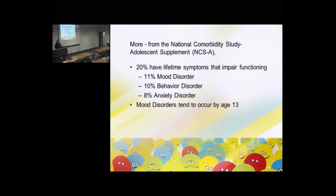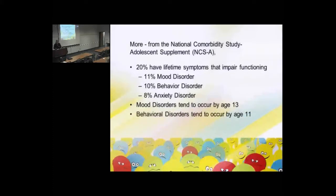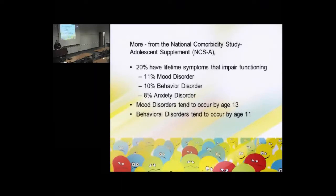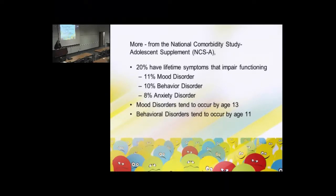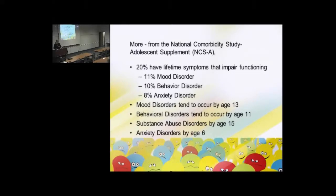Even in our smaller schools, that means we're going to be dealing with a lot of kids. There is also some variability based on age. Mood disorders tend to occur by age 13. Behavioral disorders tend to occur by age 11, but often much younger — many students who will end up diagnosed with ADHD show signs already in preschool. Substance abuse disorders tend to emerge by age 15, and anxiety disorders by age 6, but they peak in high school.